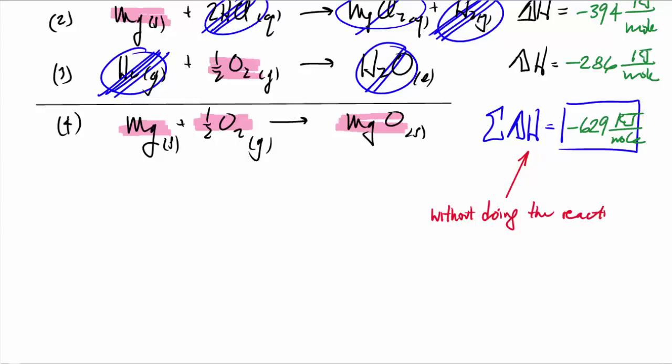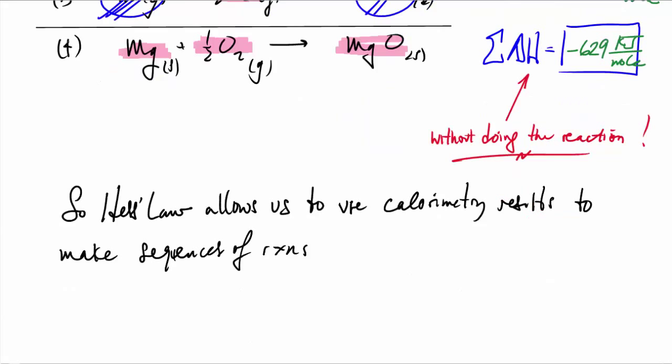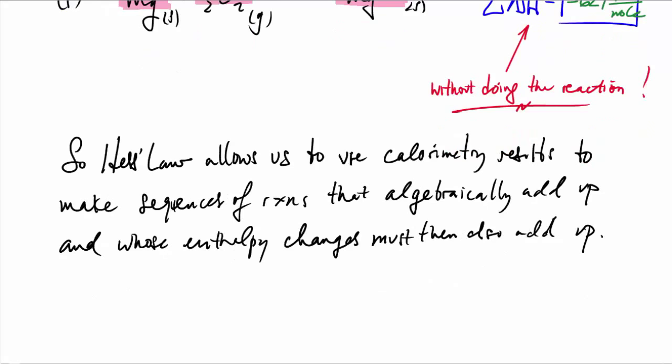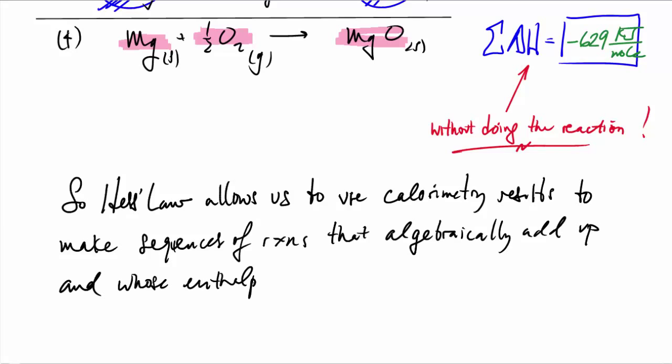And that's of course without doing the reaction. We didn't actually put magnesium in a calorimeter and burn it, but we did get its enthalpy change. So Hess's Law allows us to use the calorimetry results that we can do in the lab to make sequences of reactions that add up to reactions that we can't do in the lab or that we don't want to do, or for any reason might be impractical. And you just add them up algebraically, and those enthalpy changes that also add up, we get the overall enthalpy of the final reaction.